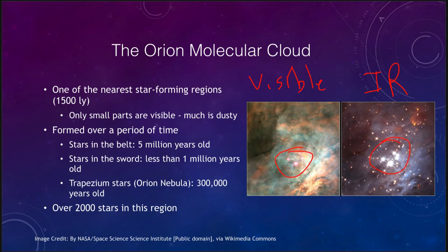In the infrared they are much more visible. Infrared light is much better able to penetrate the dust to let us look into this stellar nursery. These trapezium stars within the Orion Nebula are only a few hundred thousand years old and are some of the most massive and hottest stars we can see. Overall, we see over 2,000 stars in this Orion region.